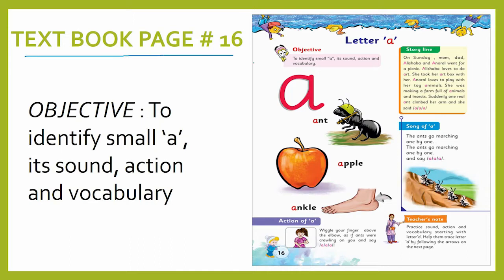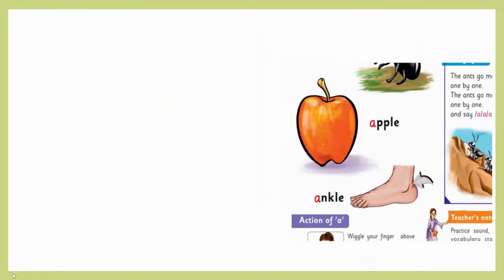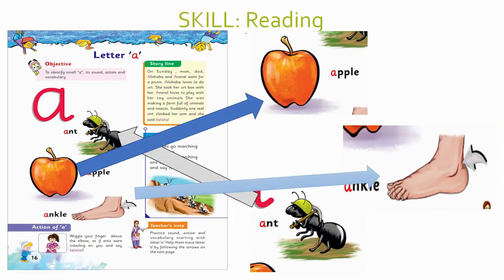I hope you remember your page number 16 — it has a lot of pictures on it. There was a story and a song as well, which we have done in the previous lessons. The main objective for this lesson is to identify small 'a', its sound, and actions with the vocabulary. Today we are going to do some reading on the page. The skill is reading — picture reading. We are going to look at some pictures and answer what these are.